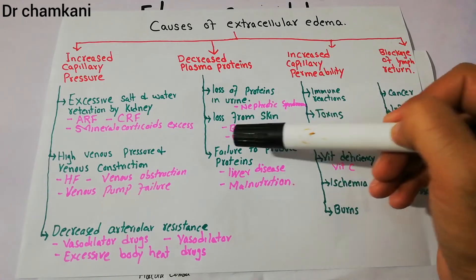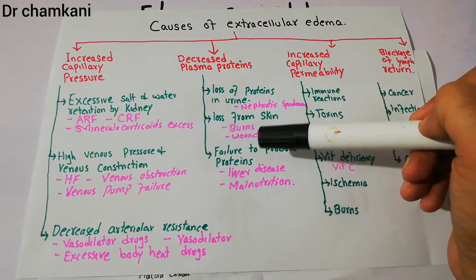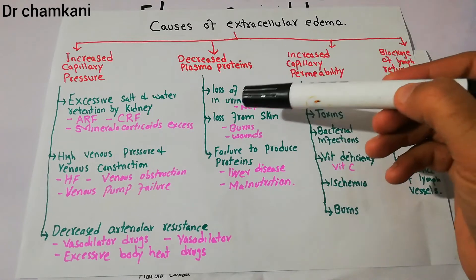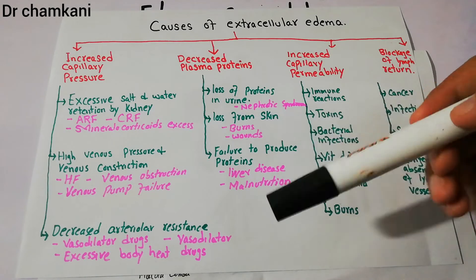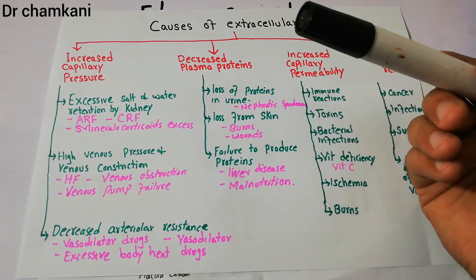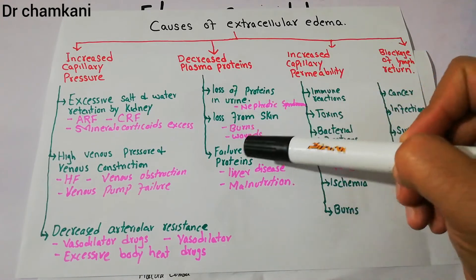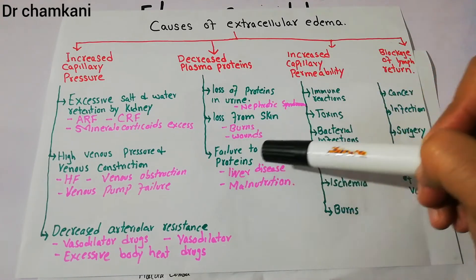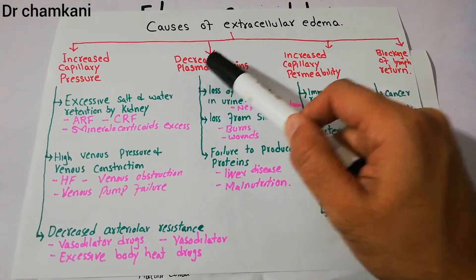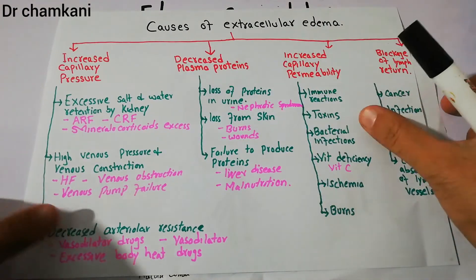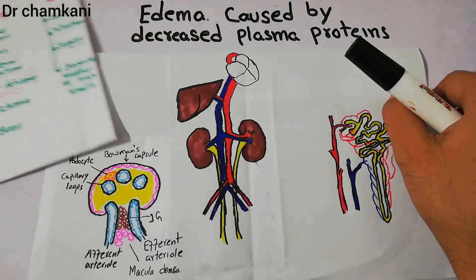Burns are also a common cause, and loss of protein from the skin in burns is common. But nephrotic syndrome and liver failure — especially in cirrhosis — are the key diseases that lead to either loss of proteins in the urine or failure to produce proteins. Both lead to decreased plasma proteins, which then leads to edema.